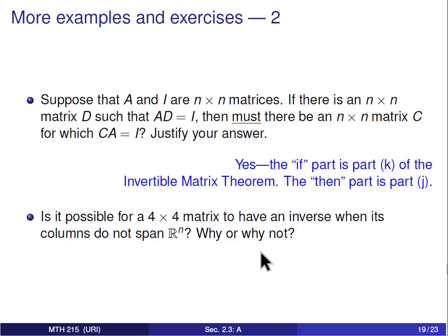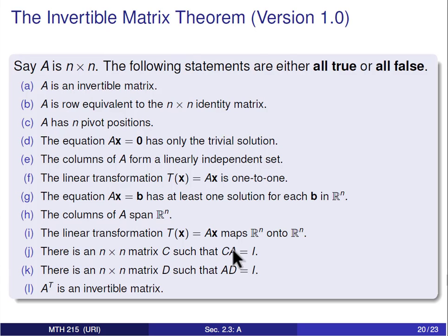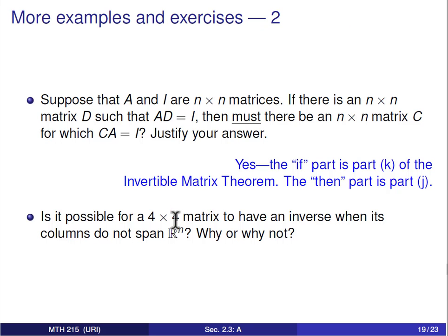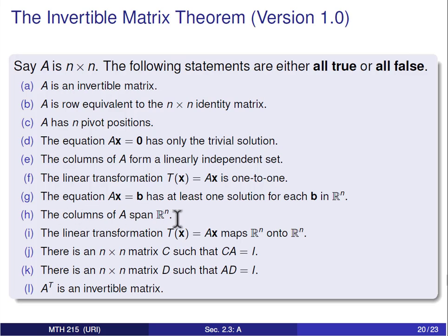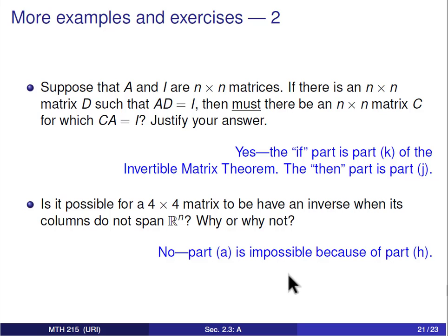Is it possible for a 4×4 matrix to have an inverse when its columns do not span Rn? Statement H in the Invertible Matrix Theorem says a matrix is invertible if and only if its columns span Rn. If the columns do not span Rn, Statement H is false, which means every part of the theorem — including Statement A that A has an inverse — is also false. It is impossible for a matrix to have an inverse if its columns do not span Rn.